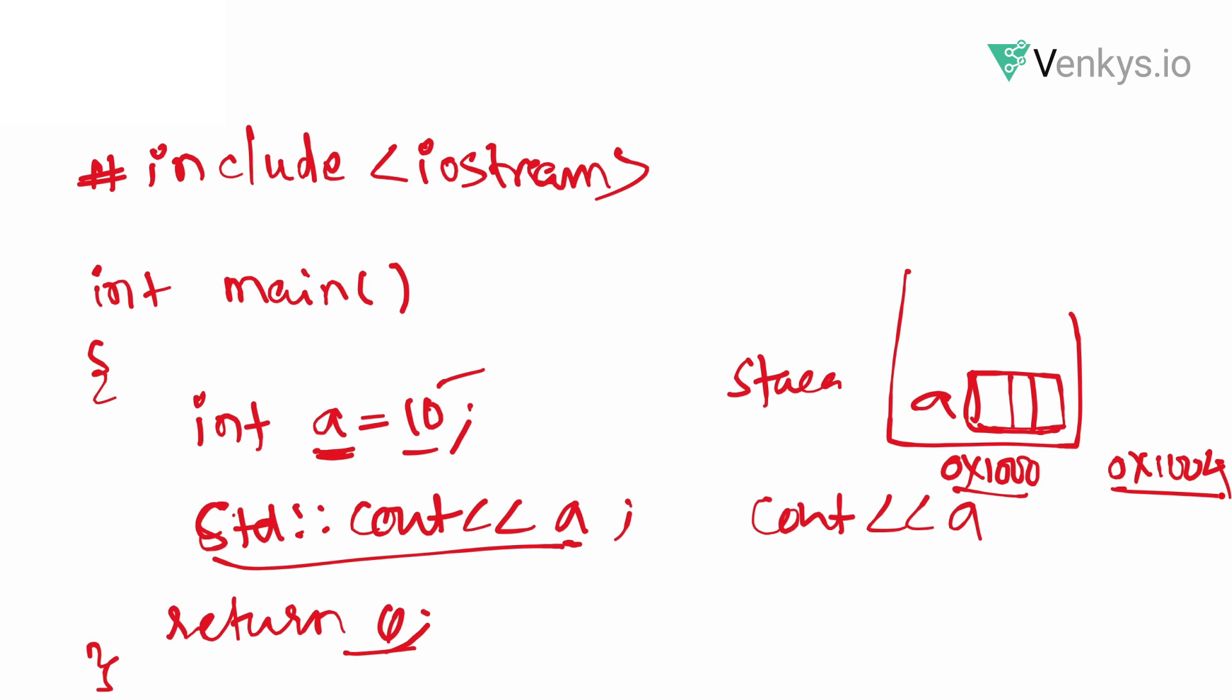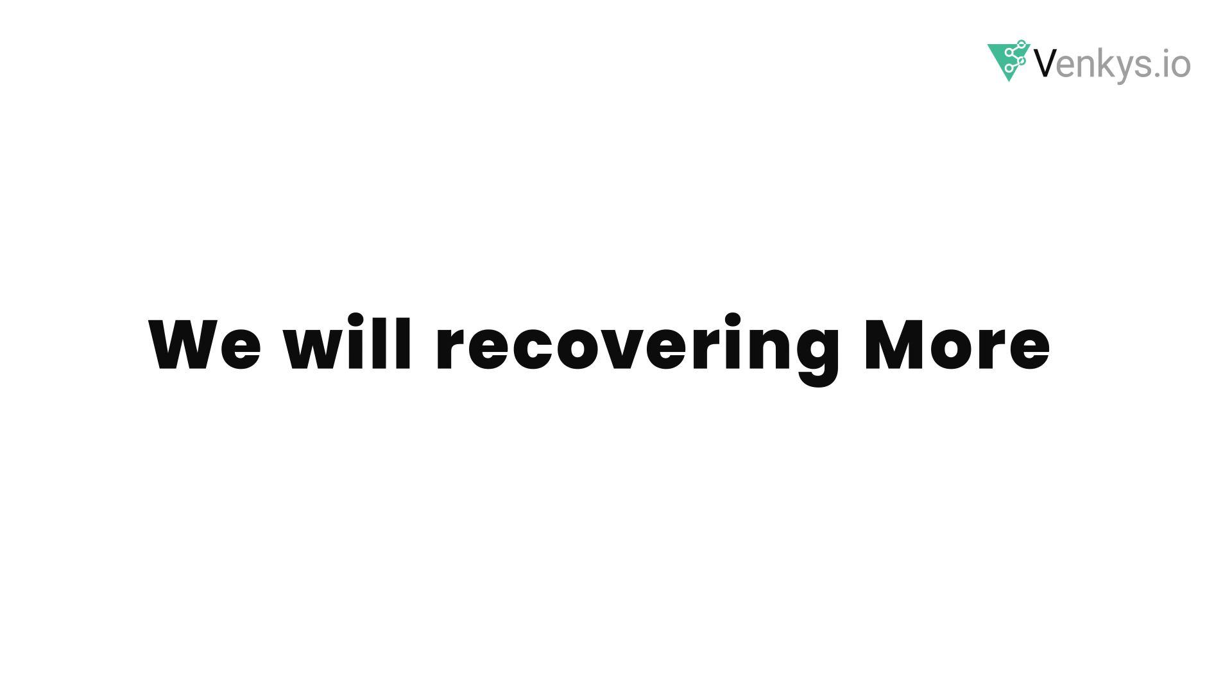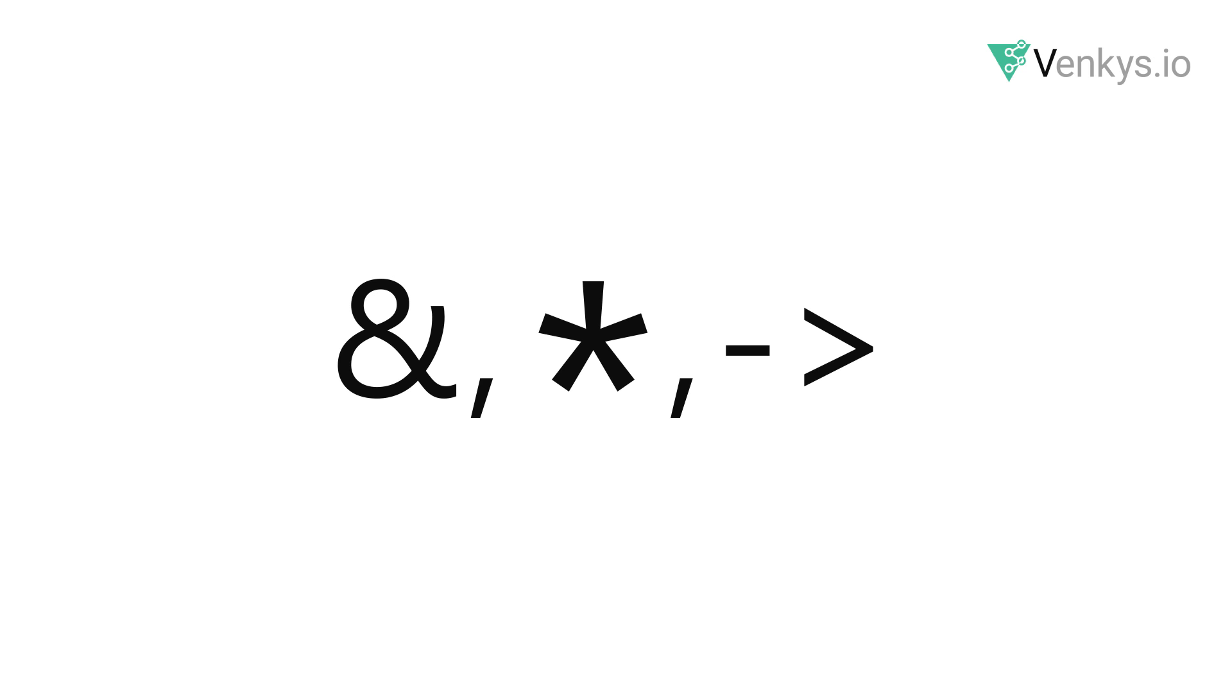That is where you have new symbols when you are dealing with pointers. One such new symbol is ampersand, and the next one is the star, and then indirection operator, which is hyphen and the greater than symbol put together. These three symbols are newly introduced to interact with addresses of your variables. These three new symbols are going to be extensively used in pointers. We will be covering more with these new symbols and how to make use of them, what we mean by them.